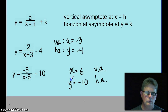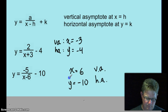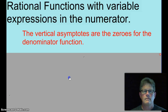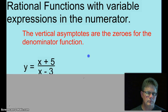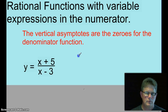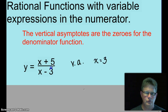Let's go ahead and see what happens when rational functions also have a variable in the numerator. We're going to look at the vertical asymptotes. The vertical asymptotes are zeros for the denominator. What is the vertical asymptote? x equals 3.